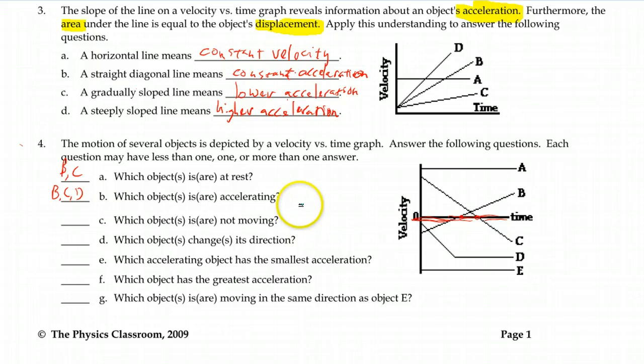Which object or objects is not moving? That indicates it's not moving at any point. That would mean it rests the whole time. In that case, we don't have any that are not moving the whole time. The flat line is not stationary. It's moving at a constant velocity.